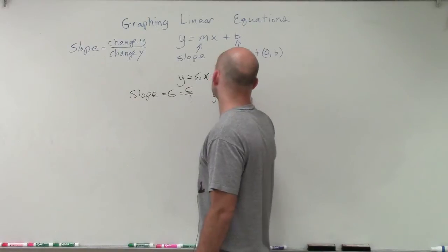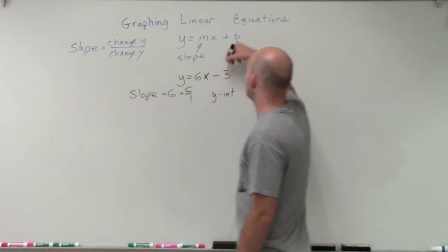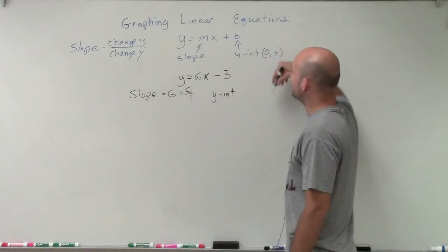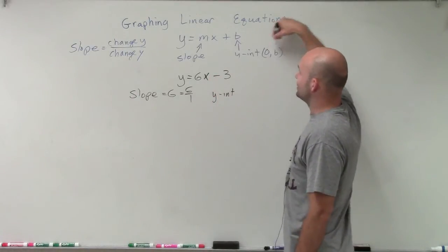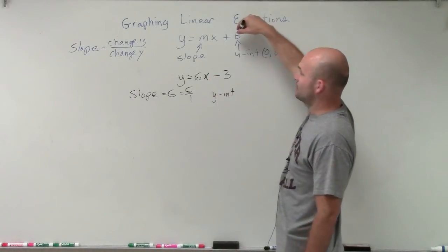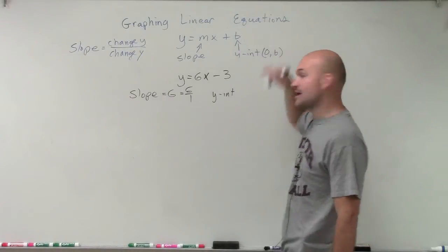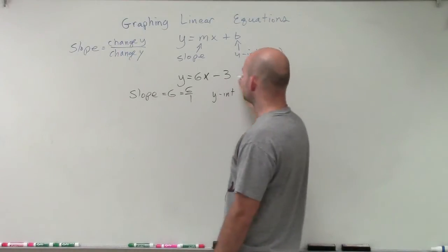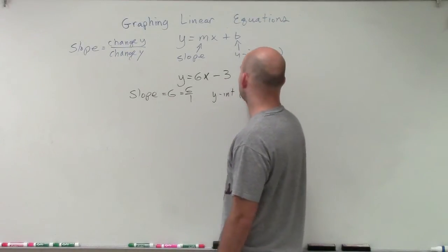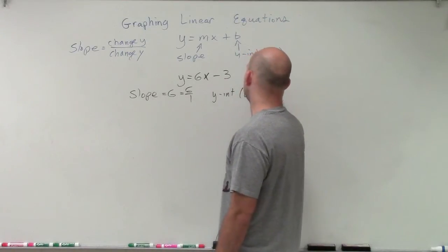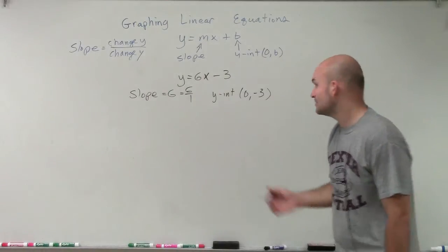We know that the y-intercept, we want to rewrite as a coordinate point 0 comma b. So we have b, and we want to write it as 0 comma b. Since this is a negative 3, it's going to be 0 comma negative 3.